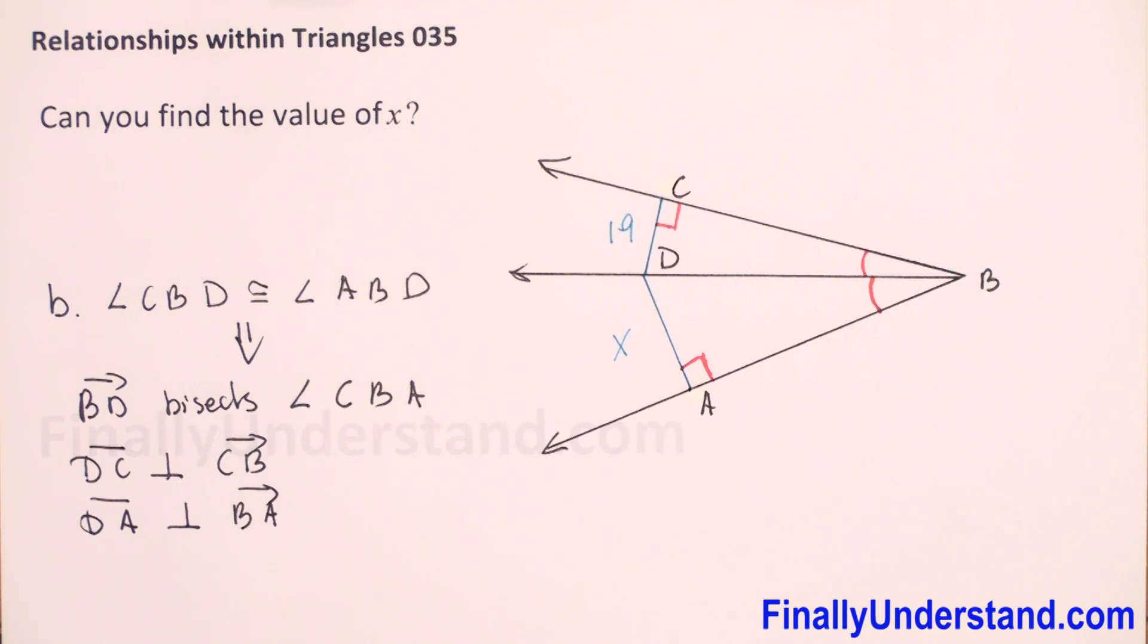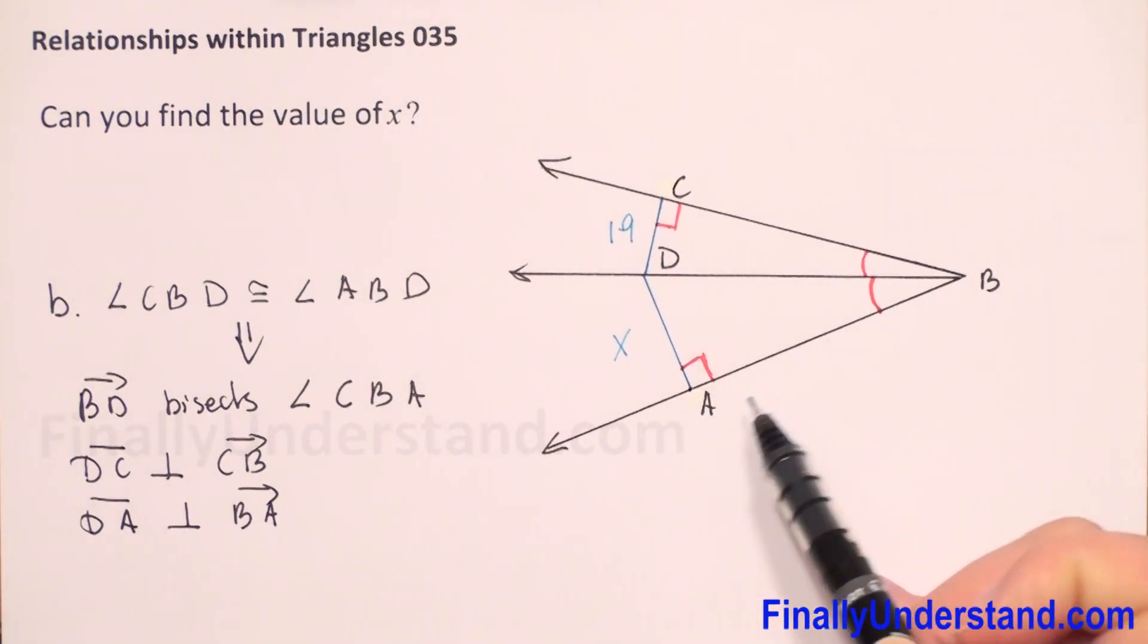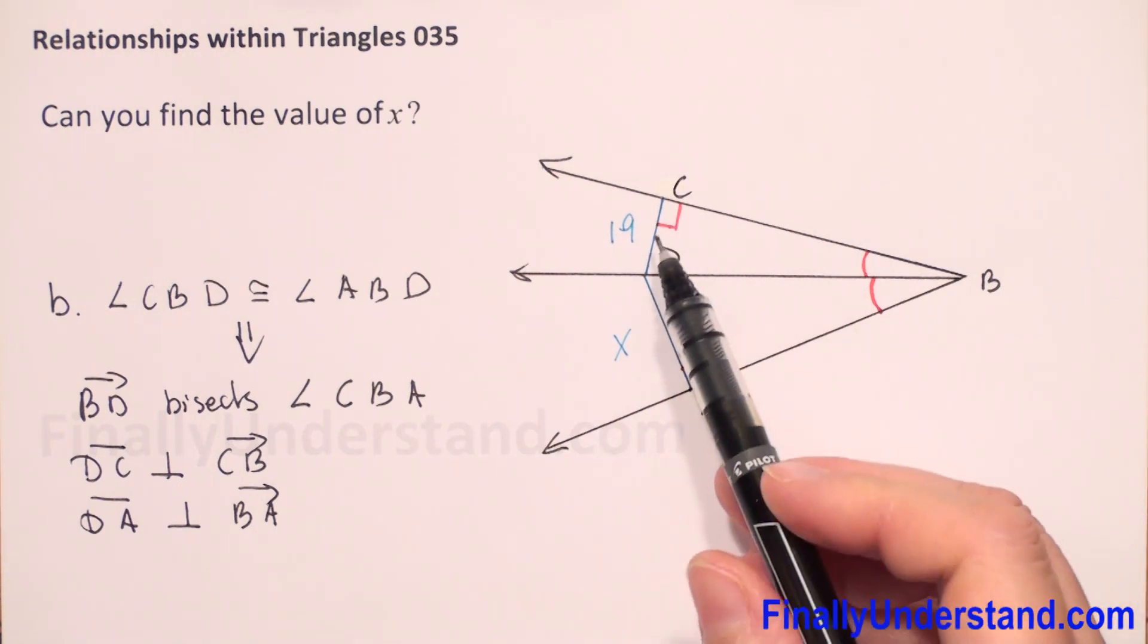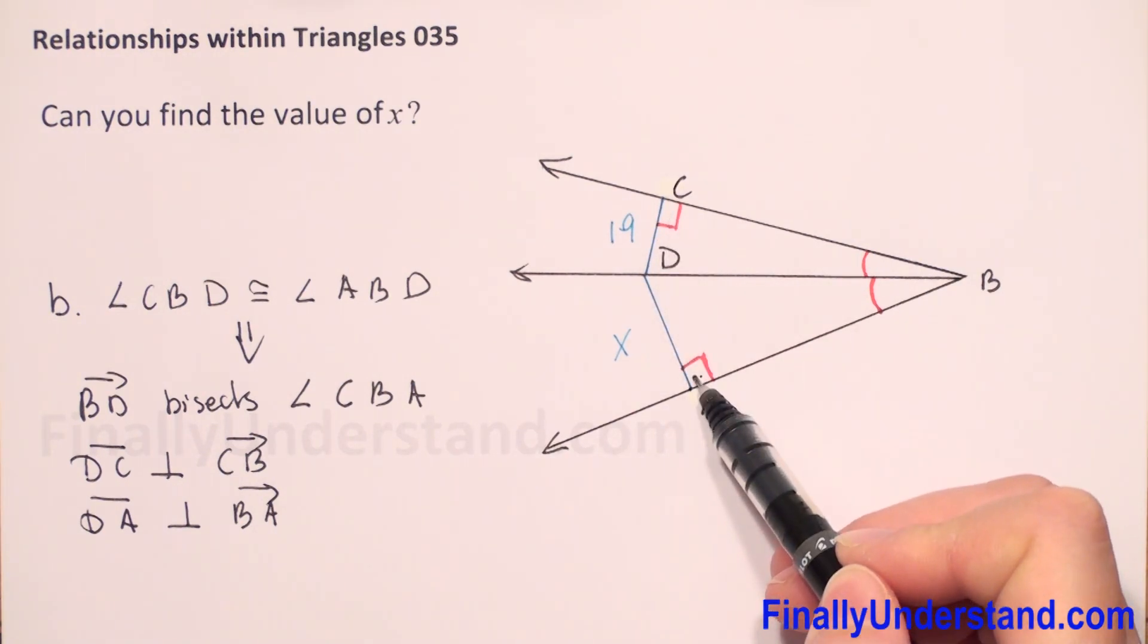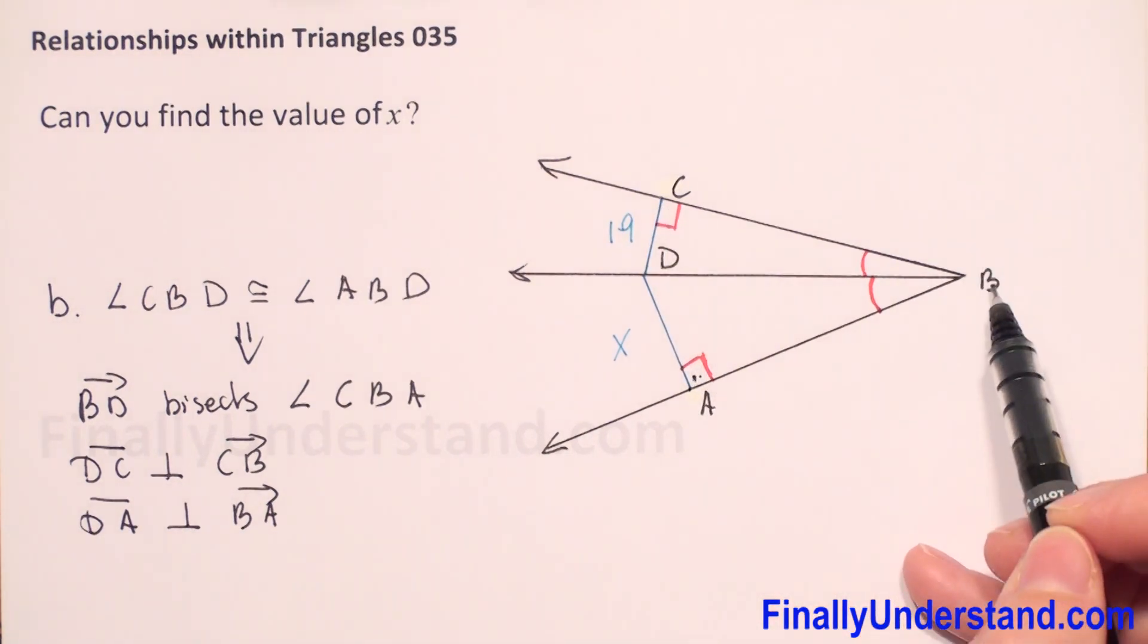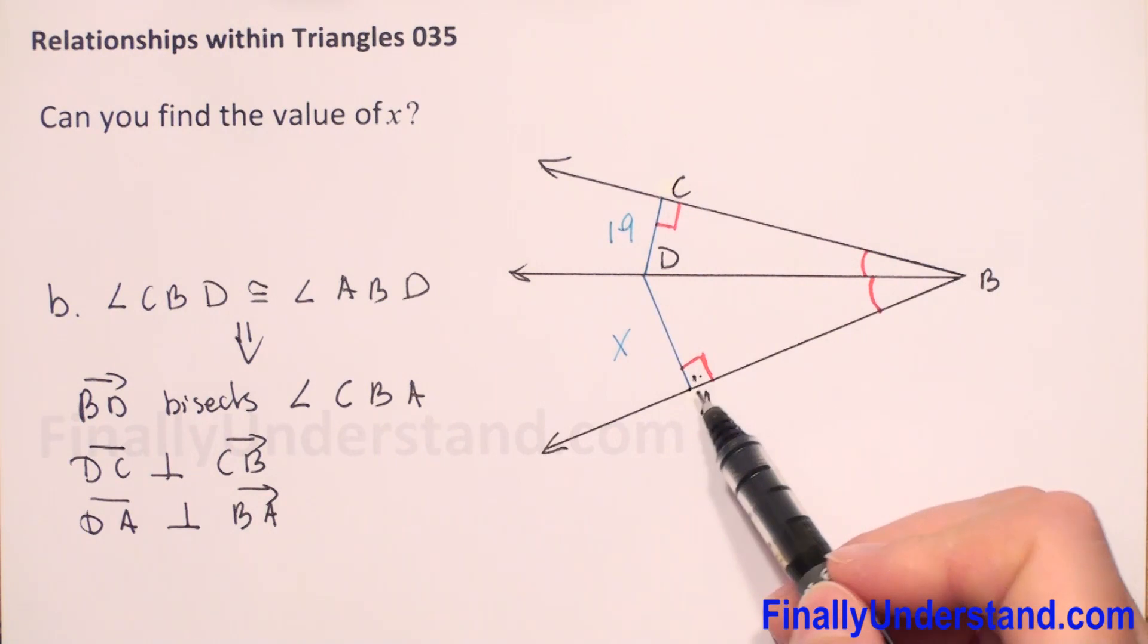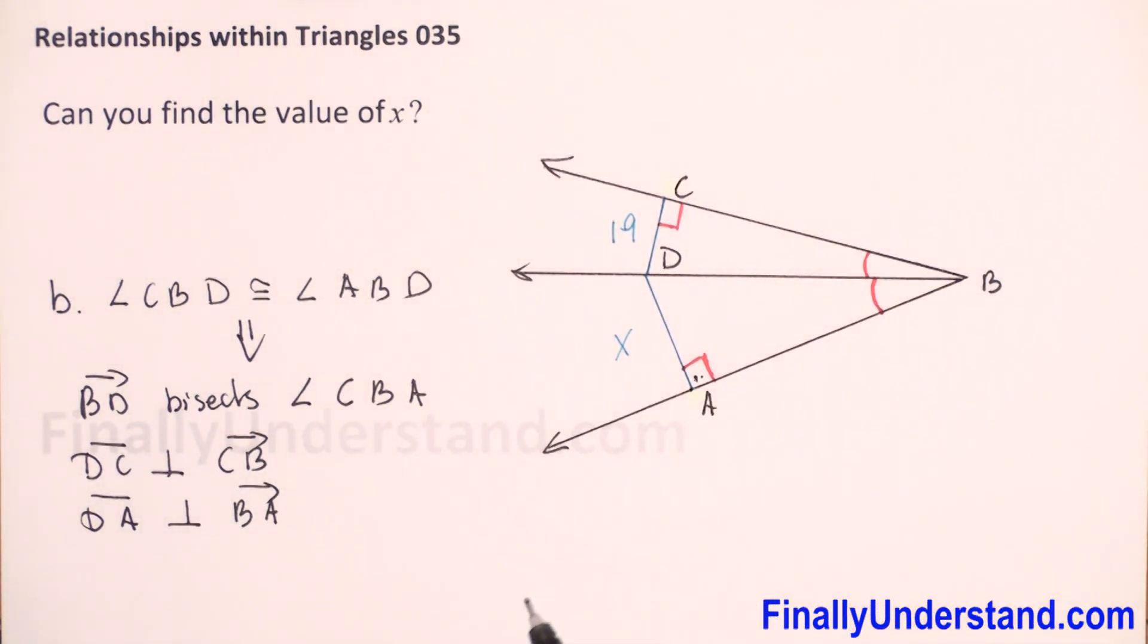So if we have given that BD bisects angle CBA and these two angles are right angles because DC is perpendicular to BC and DA is perpendicular to BA, we can use angle bisector theorem.